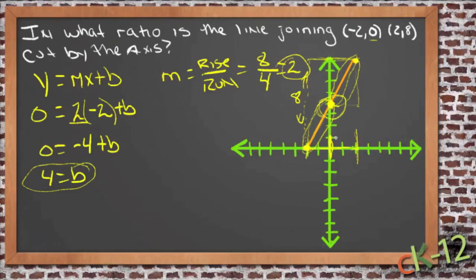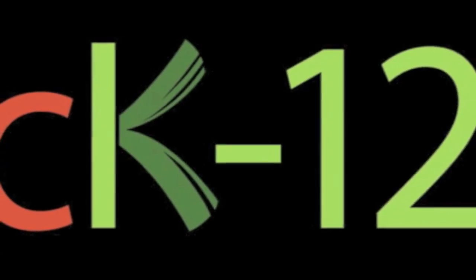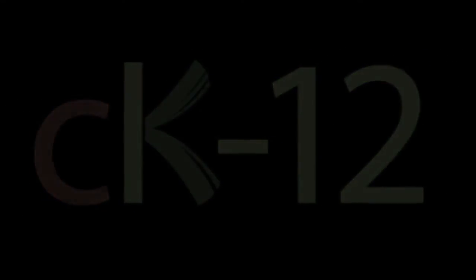So that tells us that this point is actually right in the middle. Now, it's the same difference between here and here, the top section, as it is between here and here at the bottom section. Let me change colors and highlight that a little better. So the distance between here and here, between these two points, is exactly the same as the distance between these two points. So the answer then, in what ratio is the line joining those two points, the ratio is 1 to 1. It's exactly halfway in between those two points. This section here is exactly the same as this section here. What did you do? How did you do?